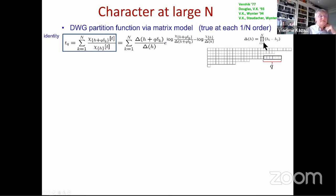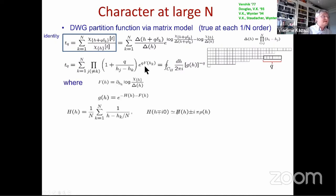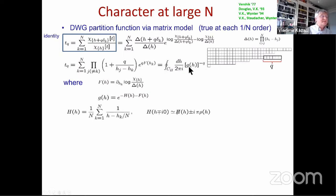Since the character is an antisymmetric function, it is not very nice for the large-N limit. We normalize by the Vandermonde determinant — which is actually the dimension of the representation — and represent the ratio as an exponent of a difference of logarithms. In the large-N limit this formula can be represented with f being simply the derivative with respect to q — a very small shift on the background of a very big Young tableau.